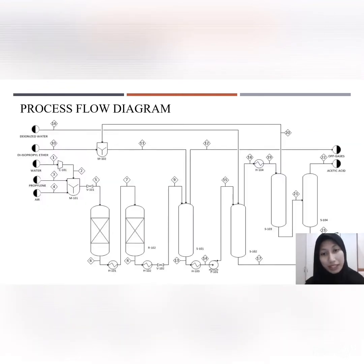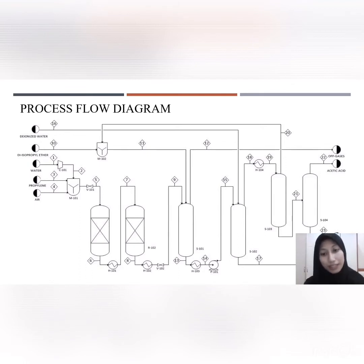This is our process flow diagram (PFD). The raw materials are mixed in a mixer before being fed into Reactor 1, which is a trickle bed reactor where acrolein formation occurs. The reactor operates at 300 degrees Celsius with acrolein yield of 23%. The products and byproducts are then transferred to Reactor 2 where acrolein reacts with oxygen to form acrylic acid at 300°C with a yield of 97%. The products are then fed into an absorption column where CO2, oxygen, propylene, and undissolved acrylic acid are removed at the top stream.